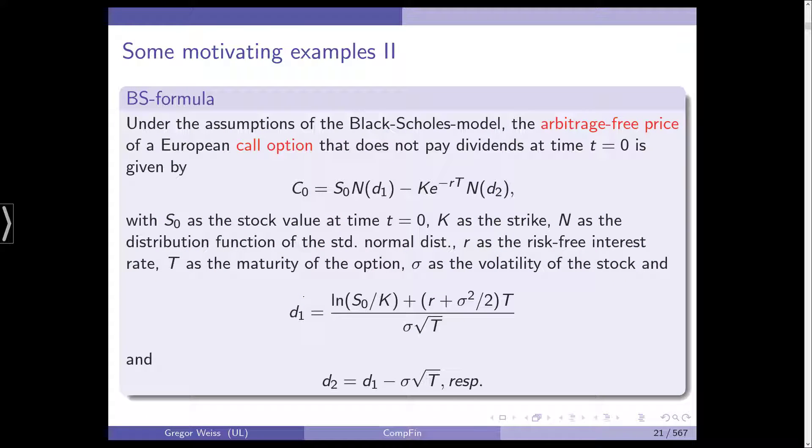That's the formula under the assumptions, the arbitrage-free price of a European call option. We do get a similar function for a put option. For a call option that doesn't pay dividends, the price is simply given by the current stock price S₀ times the distribution function N of a standard normal distribution minus the strike K times the exponential function. This is actually a discount factor, times a second value at D₂ of the standard normal distribution function.